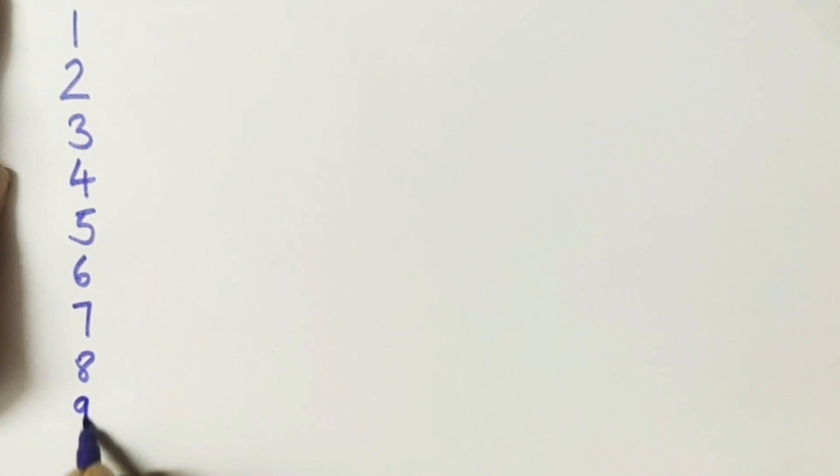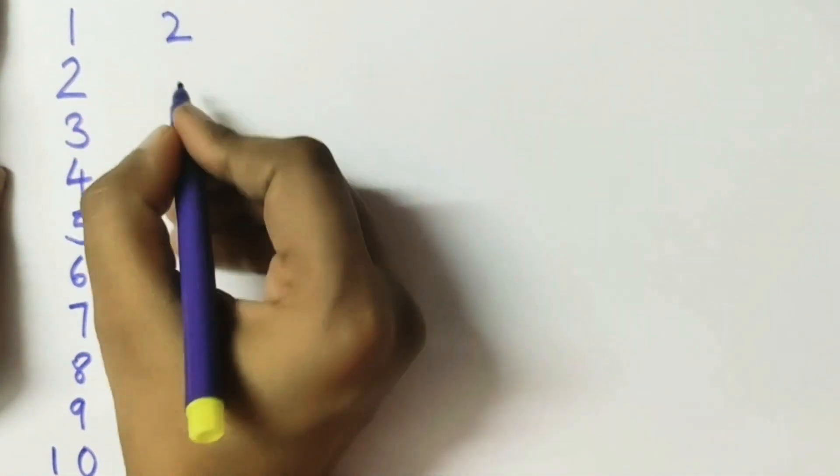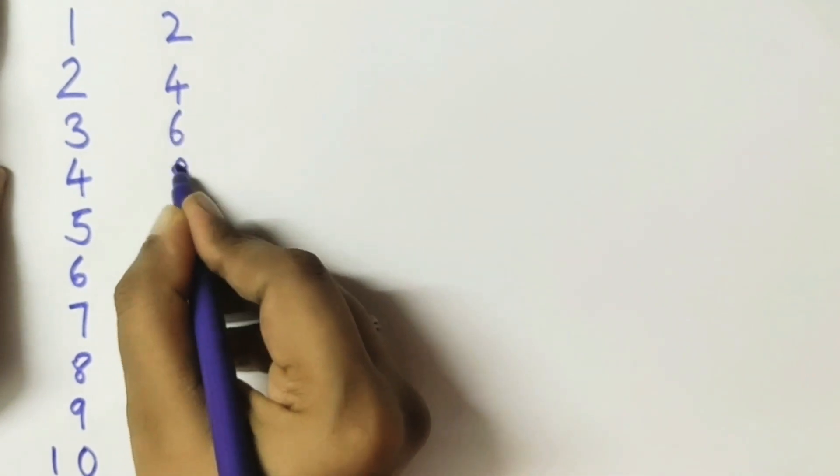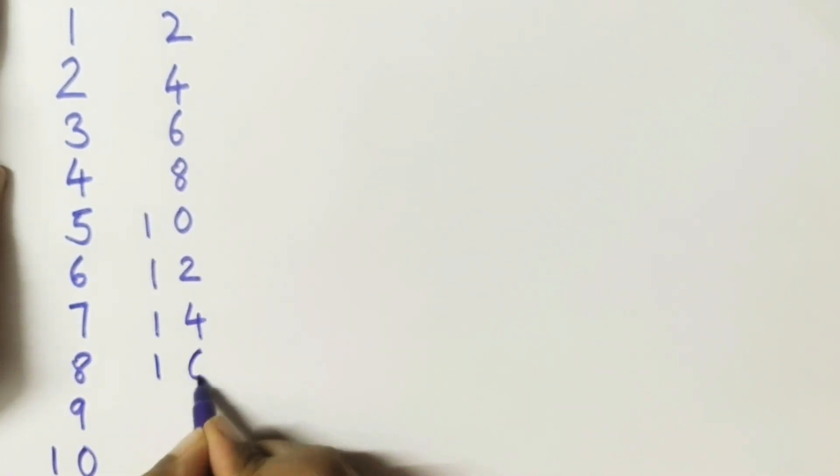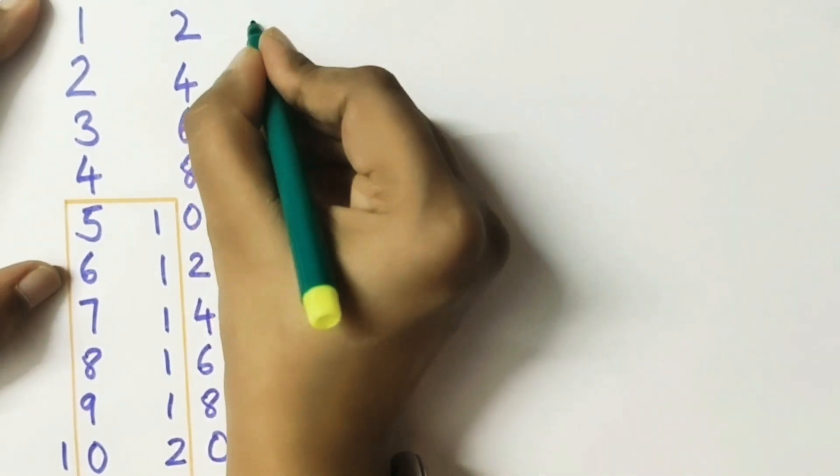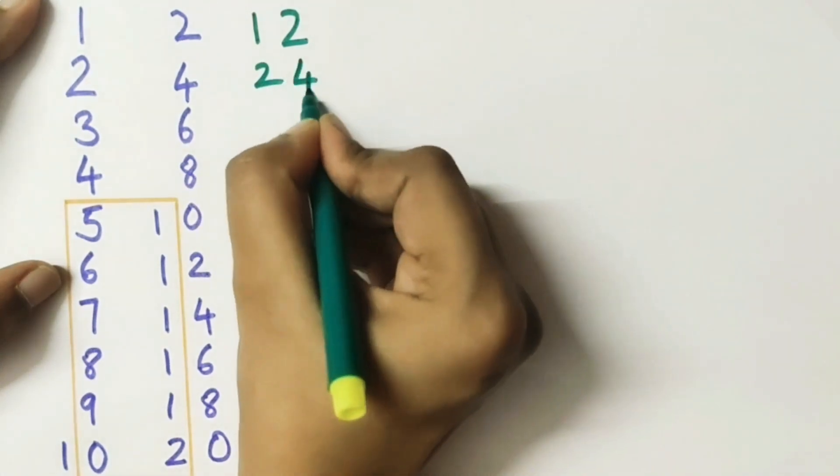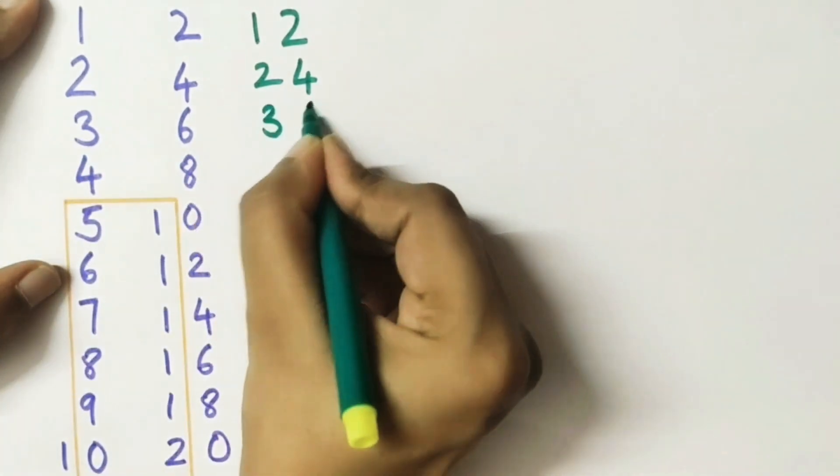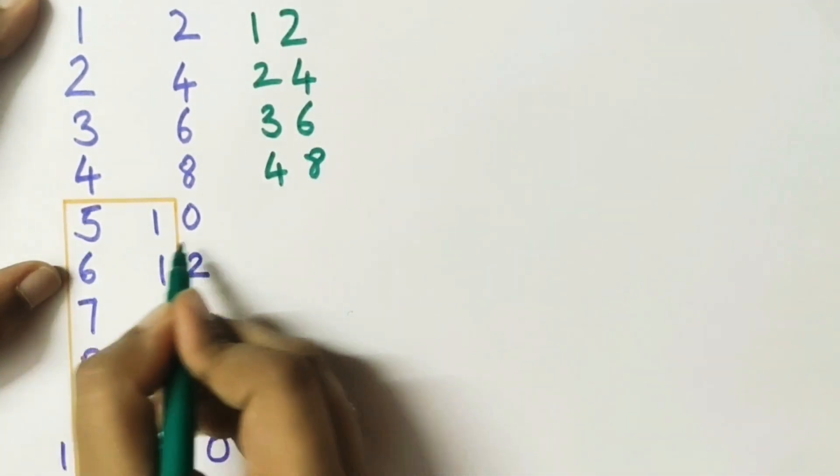The next step will be: if you get two numbers, you don't have to do anything more because that's your answer. 1, 2 equals 12. 2, 4 equals 24. 3, 6 equals 36. 4, 8 equals 48. But when we will get 3 numbers...